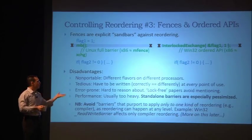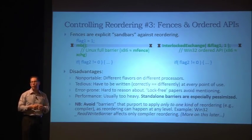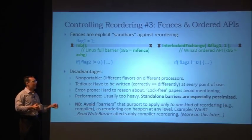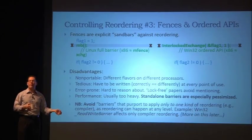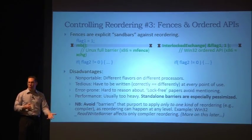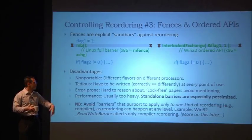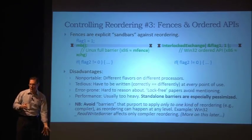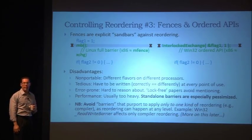On x86, on Windows, interlocked exchange is basically your go-to, and that's a full barrier. You do get interlocked exchange acquire and interlocked exchange release, which is variously well supported by platform, and you can use those also. You'll get pretty much what you would get with an atomic, but it still has the disadvantage that you have to write it on every point of use. If you just declare the variable as atomic, then you can just use it, and that's a nice place to be.